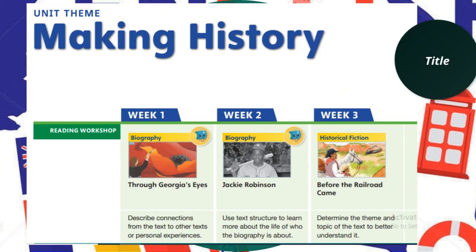The unit theme for volume four is 'Making History,' and we will be introduced to genres like biography and historical fiction. The first story is 'Through Georgia's Eyes,' where we will describe connections from the text to other texts or personal experiences. Then we will read the historical fiction 'Before the Railroad Came' and determine the theme and topic of the text to better understand them.